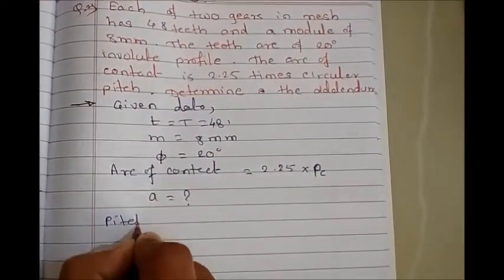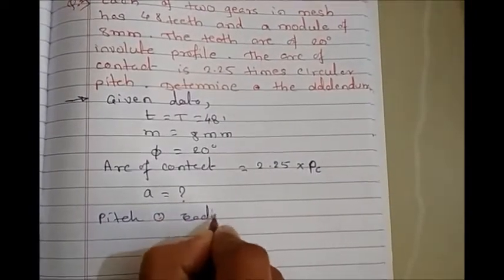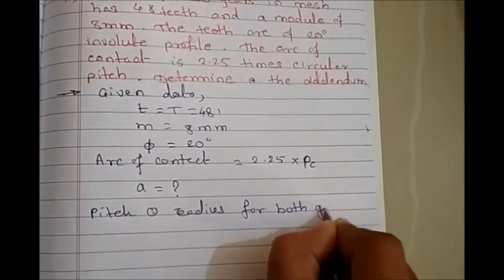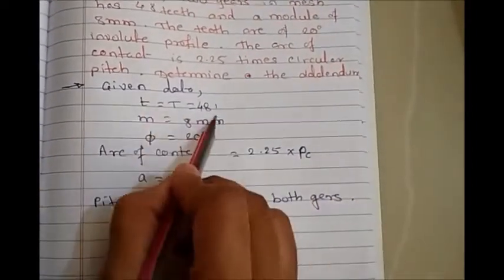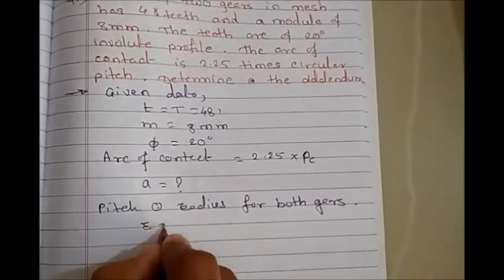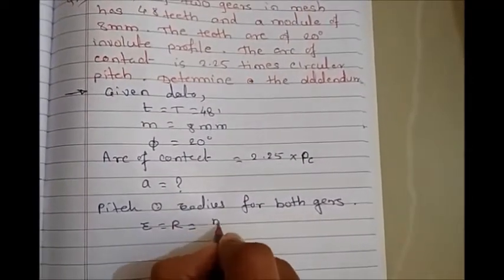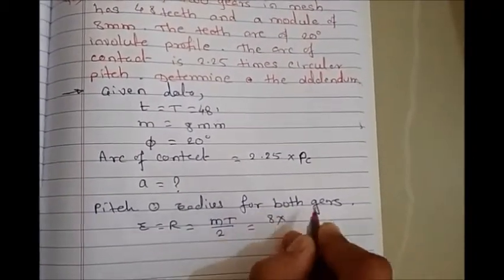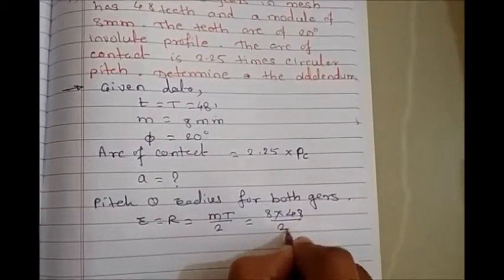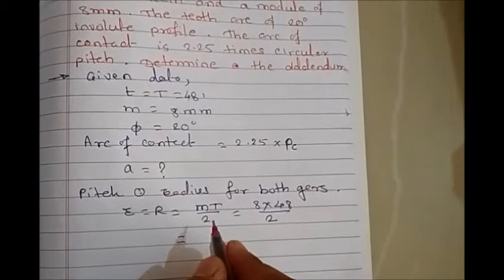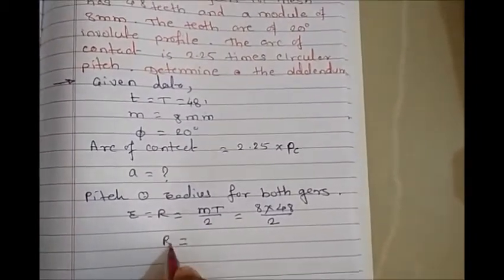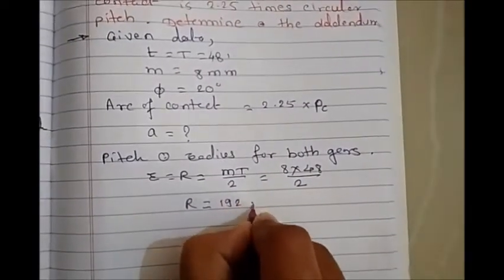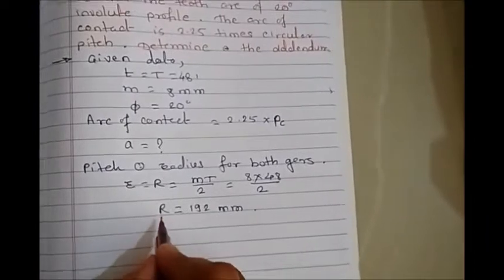We have the number of teeth and can calculate pitch circle radius for both gears. Since both gears have the same number of teeth, R equals mT/2, so module 8 times teeth 48 divided by 2. It becomes, let me use only one symbol, capital R equals 192 mm.